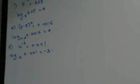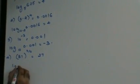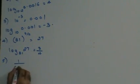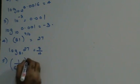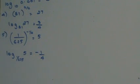I am using the first principle. Suppose if I have 81 raised to 3 by 4 is 27, then I can say log 27 to the base 81 is 3 by 4. Next: 1 upon 625 raised to minus 1 by 4 is 5 — how do I write this in log format? Log of 5 to the base 1 upon 625 is minus 1 by 4. This is how you express indices in log form.